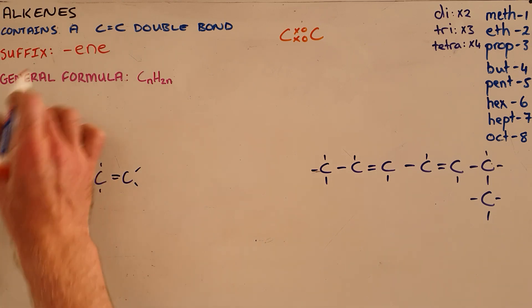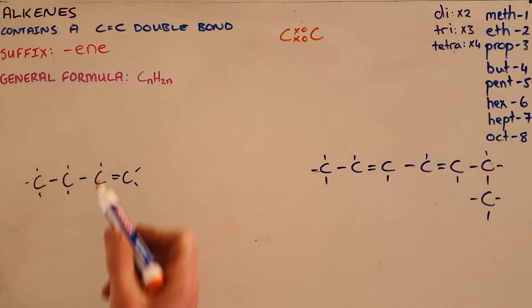Alkenes get the suffix E-N-E and have the general formula C-N-H-2-N.